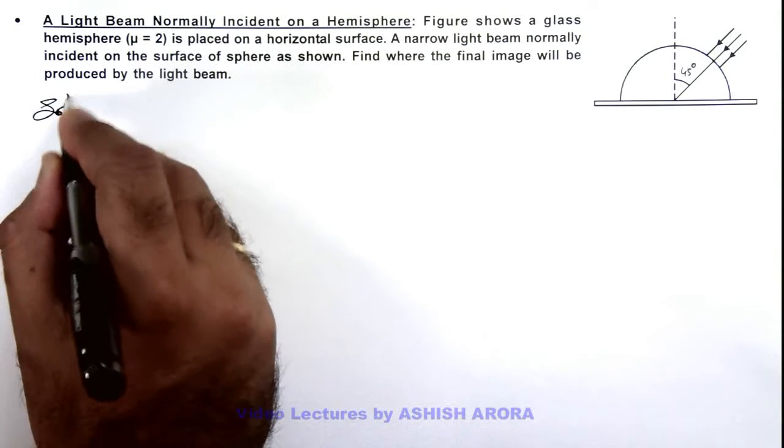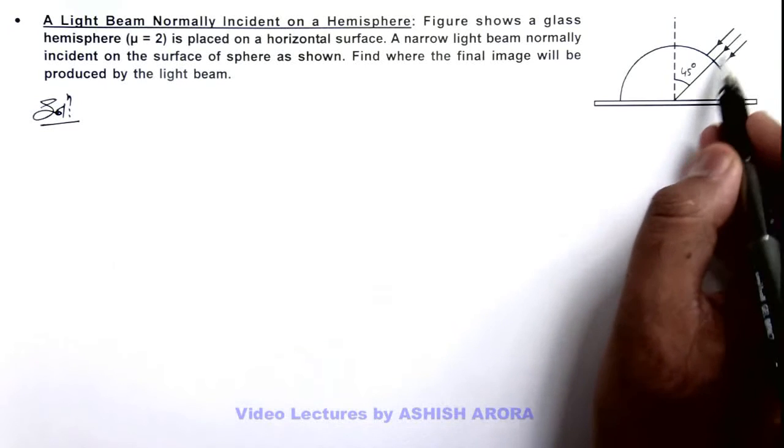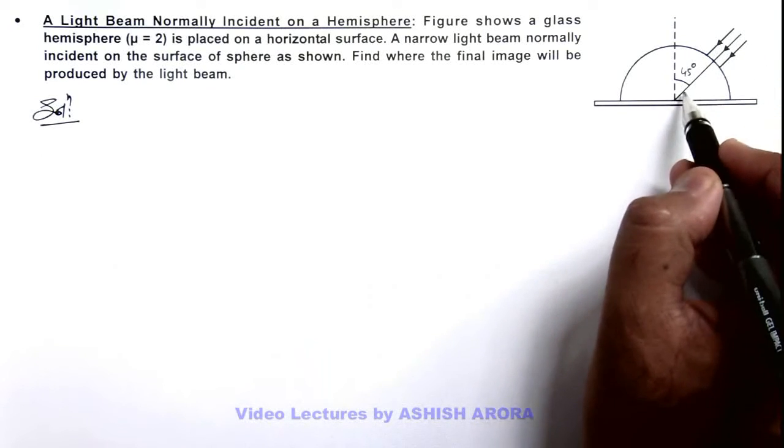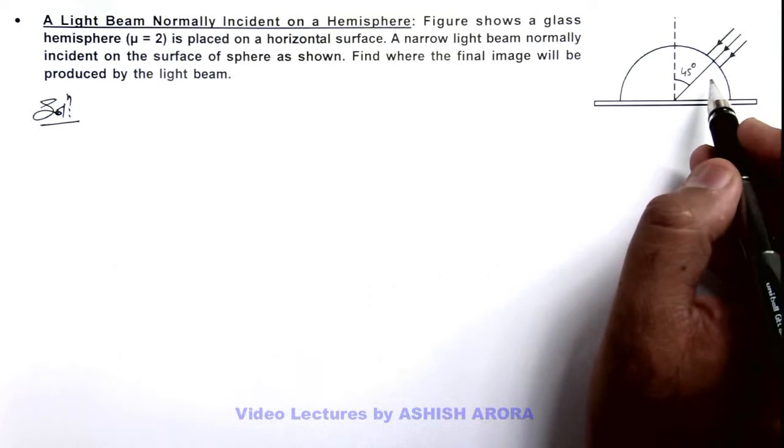Here in this solution, when the light beam is incident normally, the central ray will go straight and nearby paraxial rays will be refracted, for which we use the refraction formula.